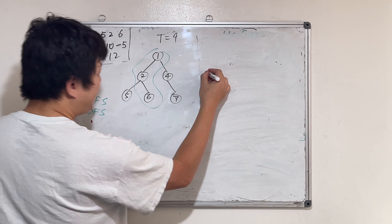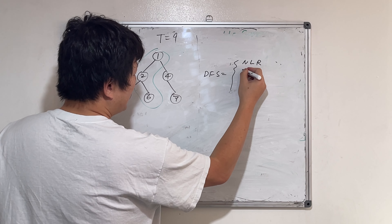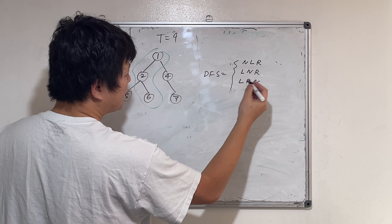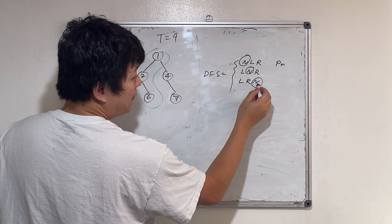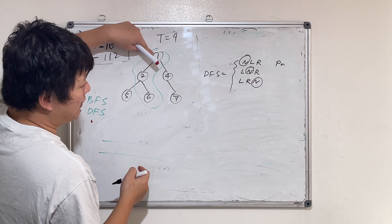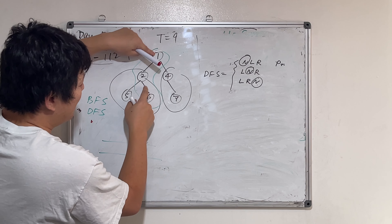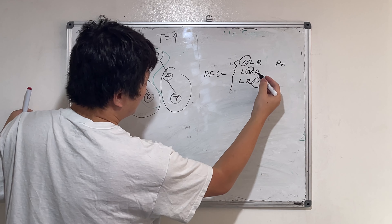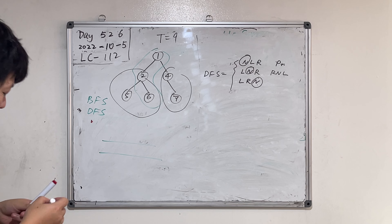In depth-first search, going deepest first: 1, 2, 5, 6, 4, 7. The depth-first search contains many orders: pre-order visits node-left-right, in-order is left-node-right, post-order is left-right-node. Pre-order means we reach the root node first, then visit the left tree, then the right tree: 1, 2, 5, 6, 4, 7. Sometimes we also have reverse in-order or reverse pre-order.